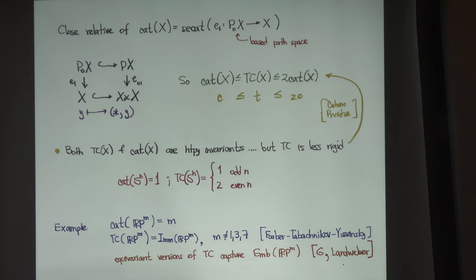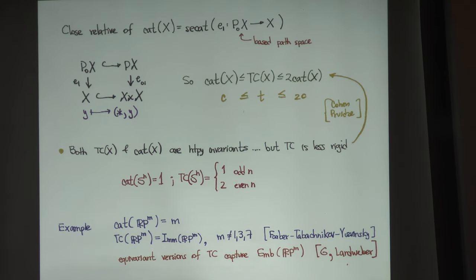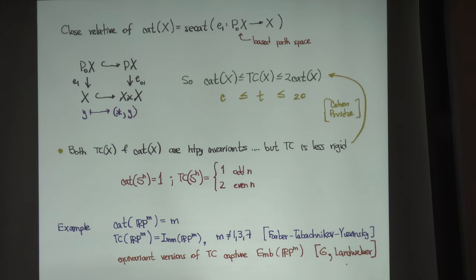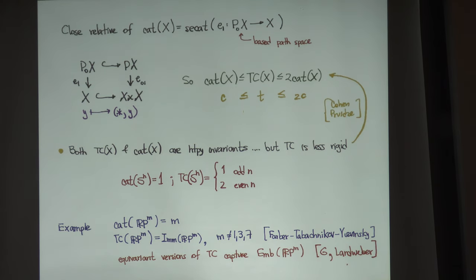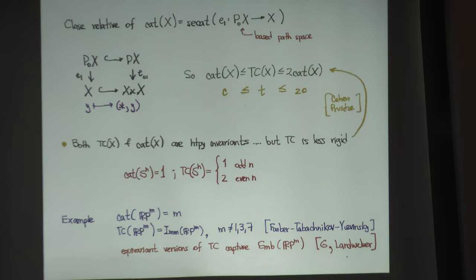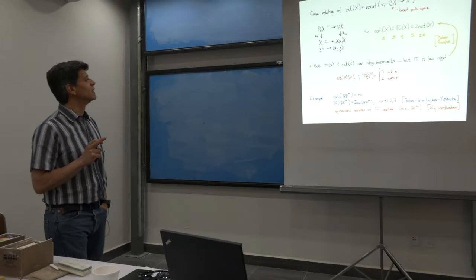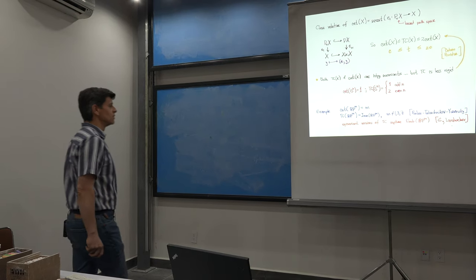Both are homotopy invariants — we are homotopy theorists, so we like that. But topological complexity is less rigid. For instance, it's quite easy to see that the category of a sphere is one, whereas the topological complexity of spheres is either one or two, depending on the parity of the dimension of the sphere.